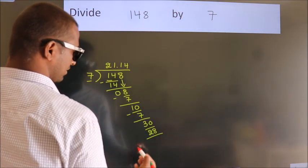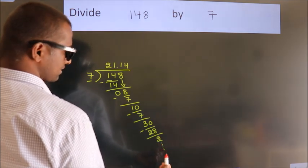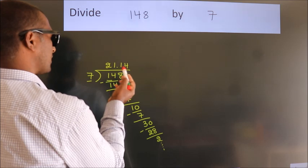Now we subtract, we get 2, and the division continues. It is enough if we do up to 2 decimal places.